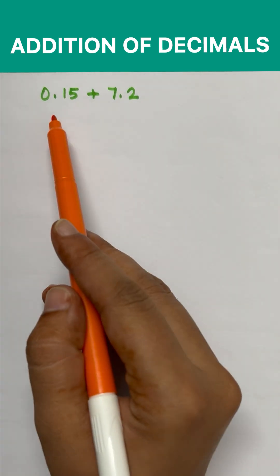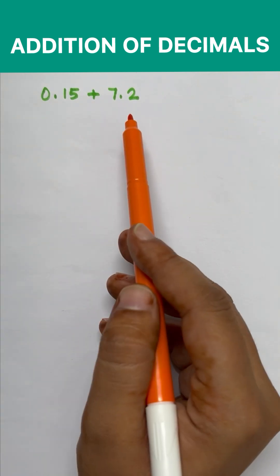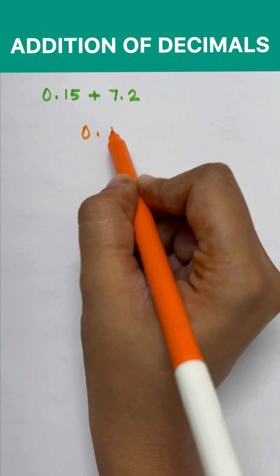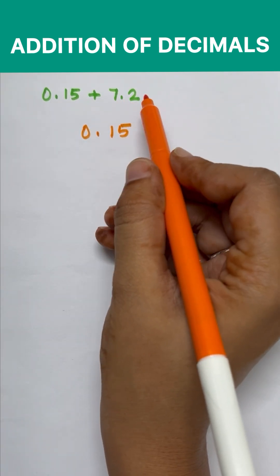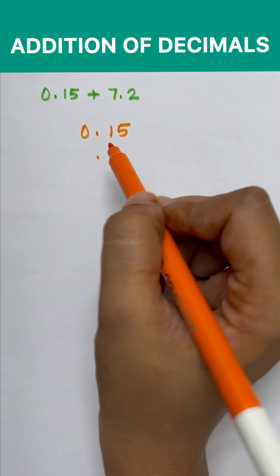Look at the question 0.15 plus 7.2. First we will arrange the numbers. We will write 0.15 and then we have to add 7.2. So what we have to do, we will write decimal here. We will put point here.